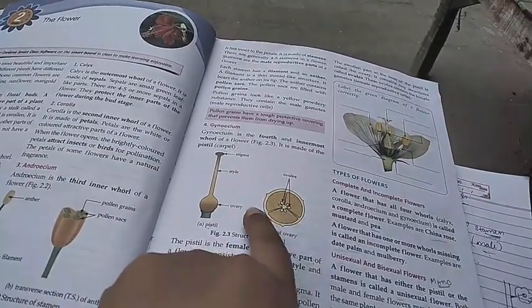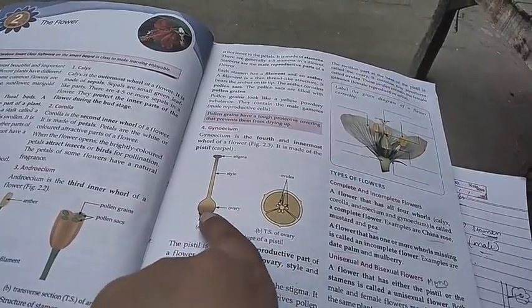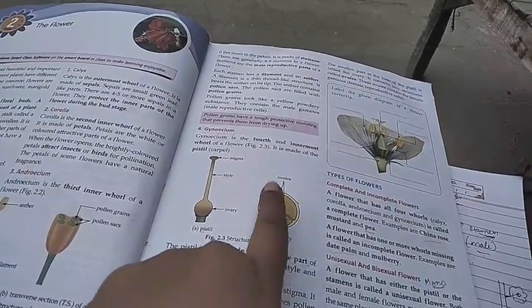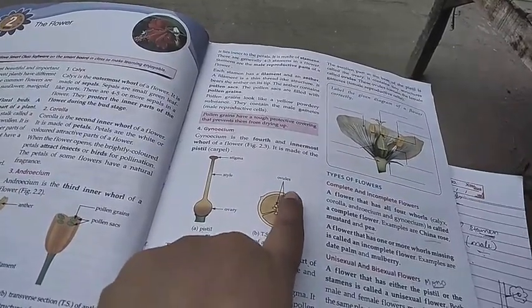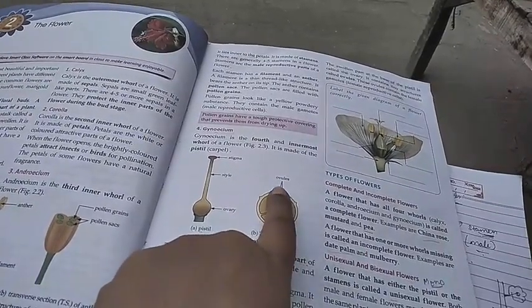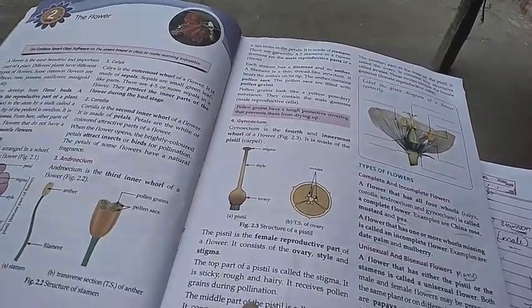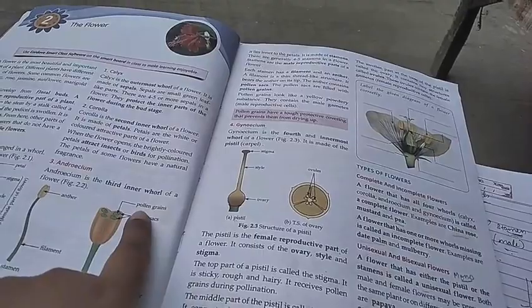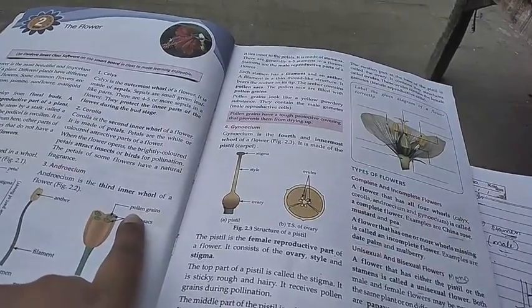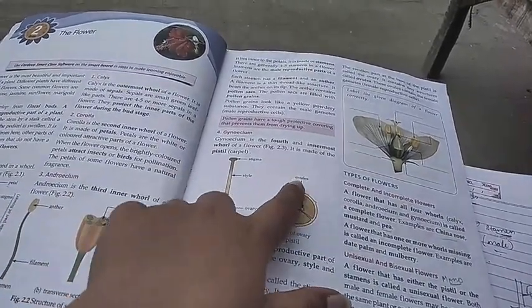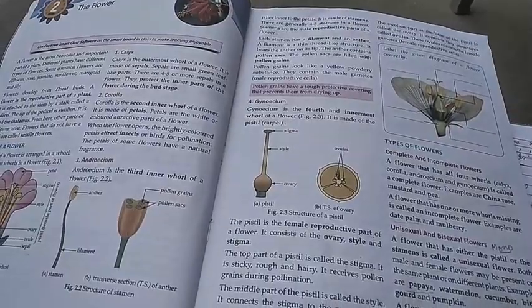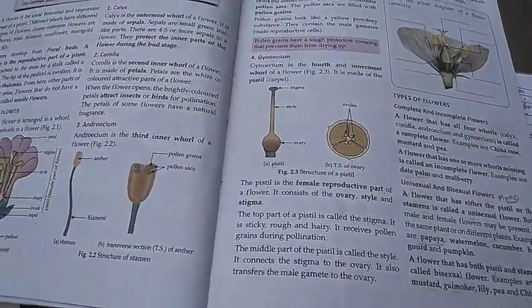And the eggs or ovules which are present inside the ovary. O-V-U-L-E-S, ovules. Like the pollen grains, which are the male reproductive gametes or cells, ovules are the female reproductive gametes or cells.